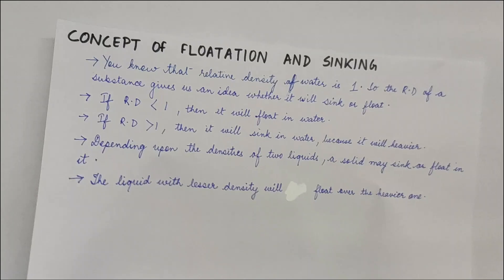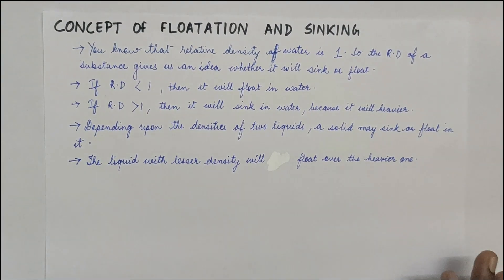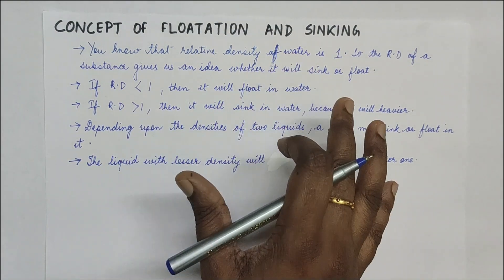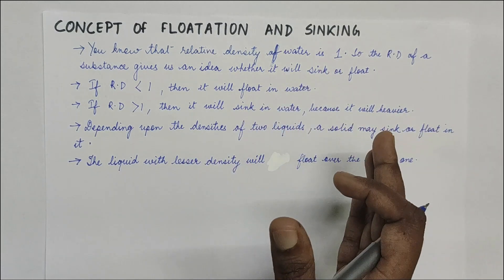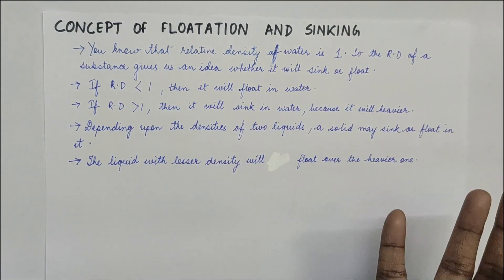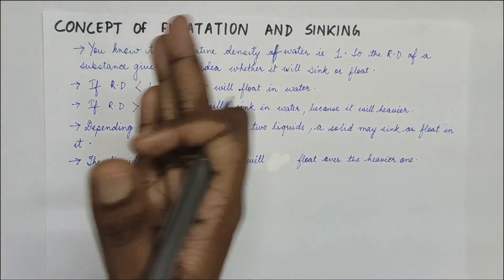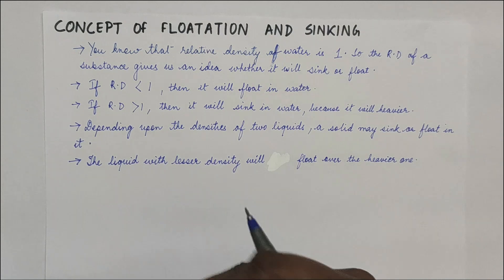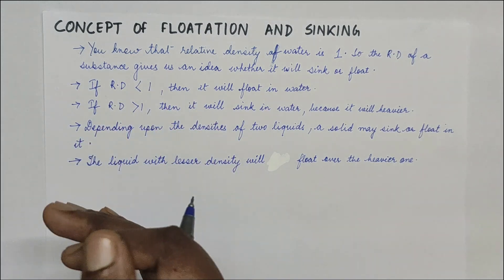Using this same concept, let's understand floating and sinking. If you remember, we talked about relative density (RD), and the RD of water is 1 because the density of water is 1 gram per cubic centimeter. The RD of a substance gives us an idea of whether it will float or sink. If the RD is less than 1, its density is less than water, so it will float in water.